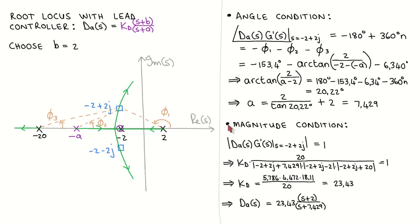Next, we place the dominant closed loop poles in the desired locations by determining the controller gain with the magnitude condition. The magnitude condition says that the magnitude of the loop transfer function at one of the closed loop poles should be equal to 1. After substituting the plant transfer function and our chosen controller transfer function, we find the controller gain to be 23.43. Our desired analog controller is therefore given by a transfer function with a zero at minus 2, a pole at minus 7.429, and a gain of 23.43.